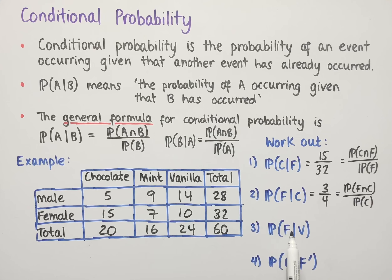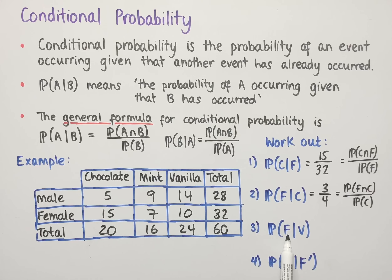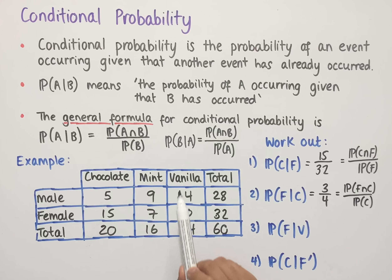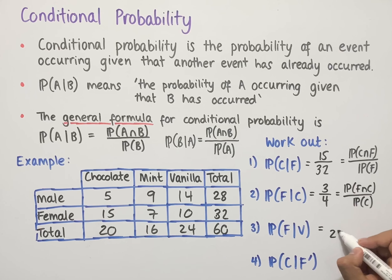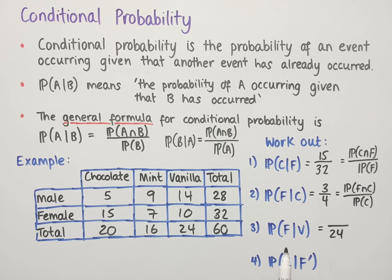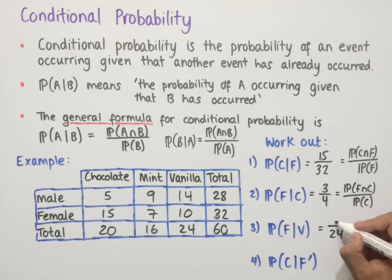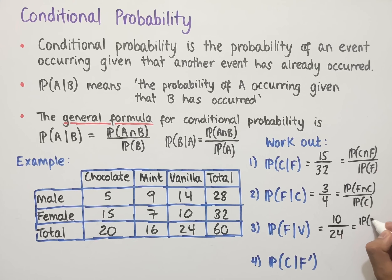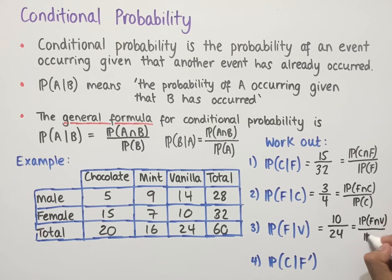The third example asks for the probability of female given vanilla. Using logic: since we're told they chose vanilla, we choose from the 24 people who chose vanilla, so the denominator is 24. Of those 24, 10 are female, giving a probability of 10 over 24. This is equivalent to the probability of female intersect vanilla divided by the probability of vanilla.